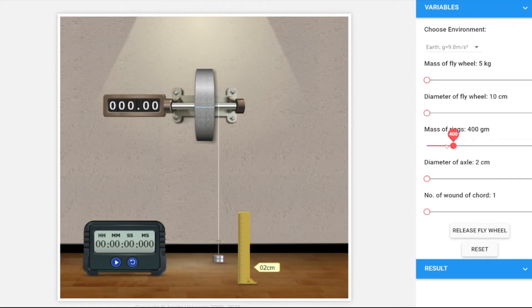You can see that when we keep our mass ring of weight 200 grams and radius of our axle is 1 centimeter, it makes 22.88 revolutions in 42.663 seconds. You can note down this reading. We will fill the observation table later. Now let's vary the mass. Let's increase the mass.